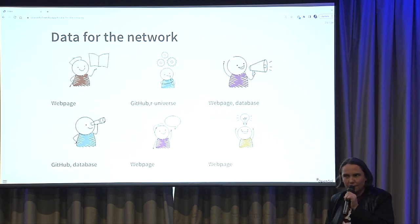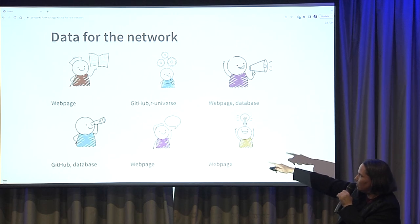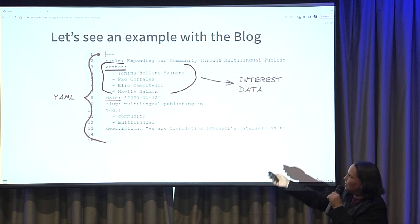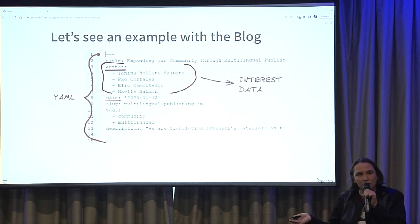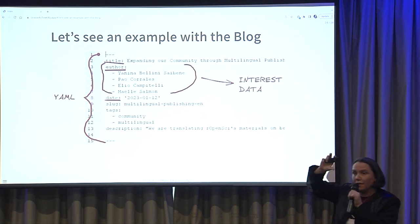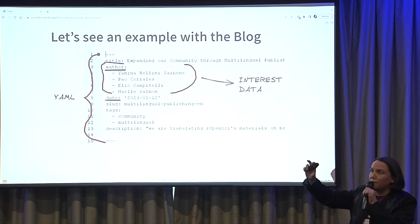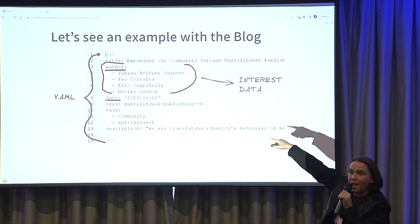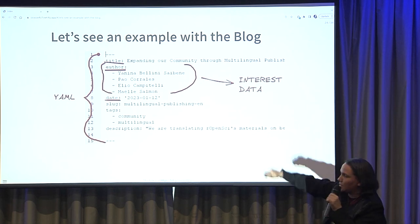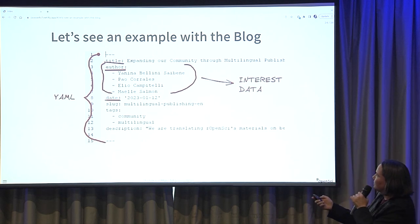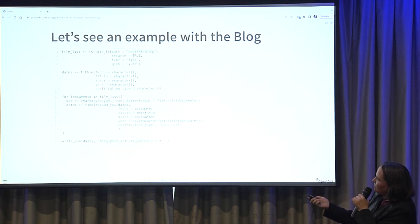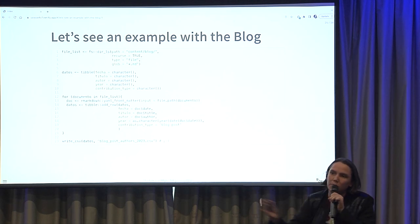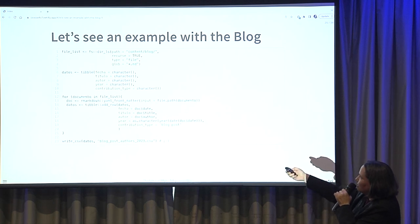Where is that data? In a web page, in GitHub, in Our Universe. Let's see an example with blog posts. We have our blog posts using Markdown — this is the YAML header of the file. You can see the title, the author — here are the people who are working together, these people wrote something — and the date when they did this. Here is the code in R for reading all the blog posts we wrote and getting that data.